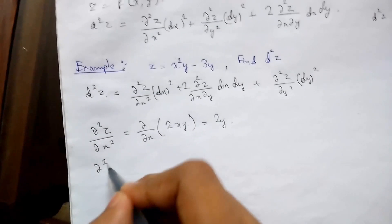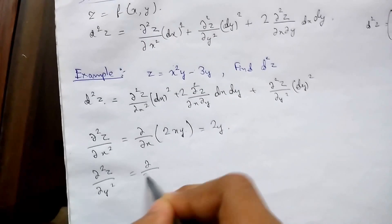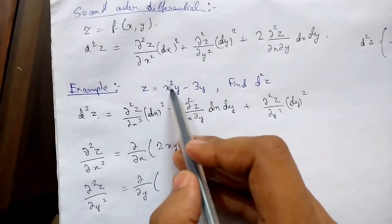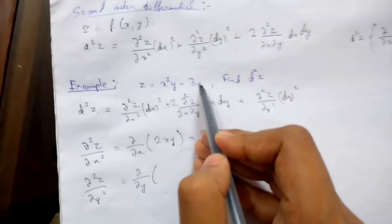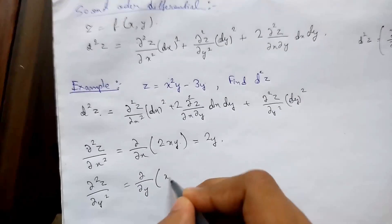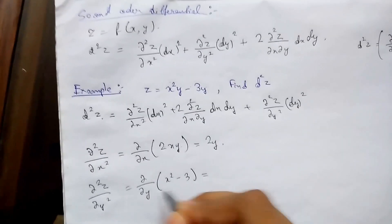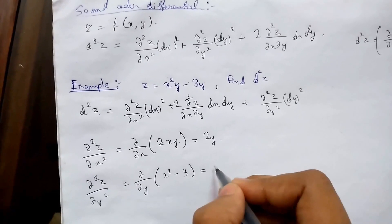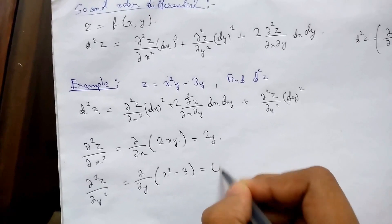And similarly del 2z upon del y 2, that will be del upon del y. So this will be x square and this will be minus 3, x square minus 3. Now differentiating this with respect to y, as there is no y it becomes a constant and that will turn out to 0.